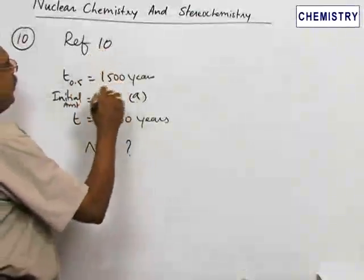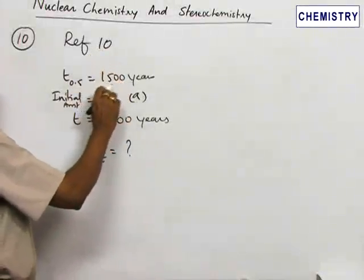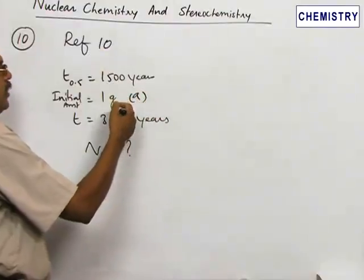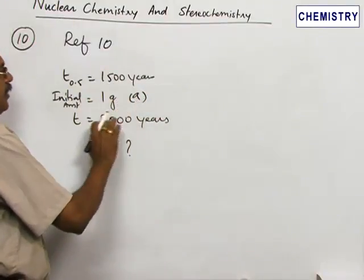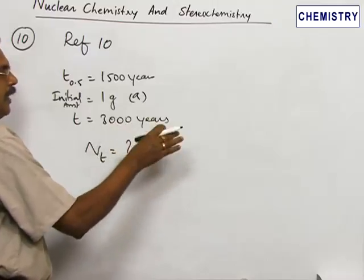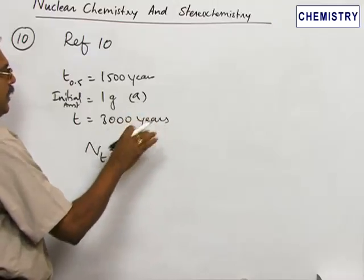Refer number 10. Here the half-life period is given as 1500 years and initially the amount of radioactive substance is 1 gram. After 3000 years, how much will be there in the closed container?